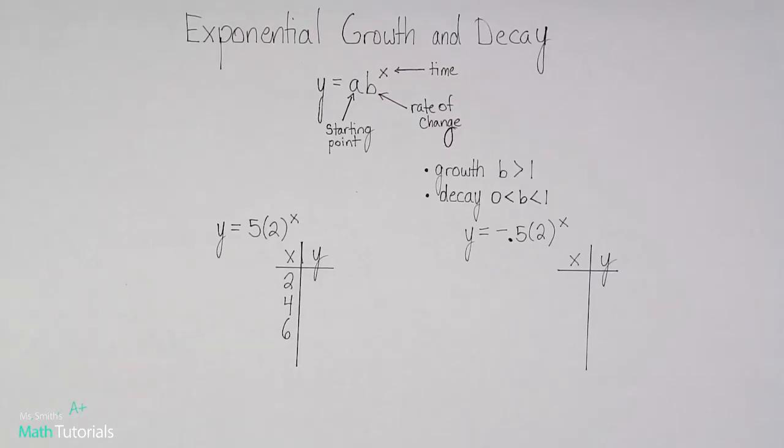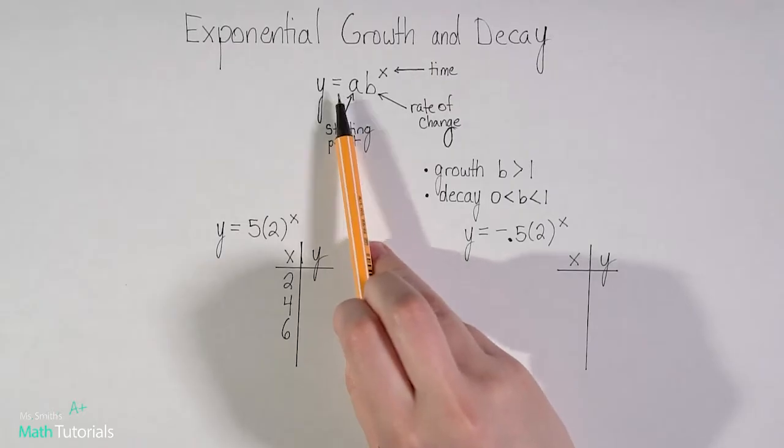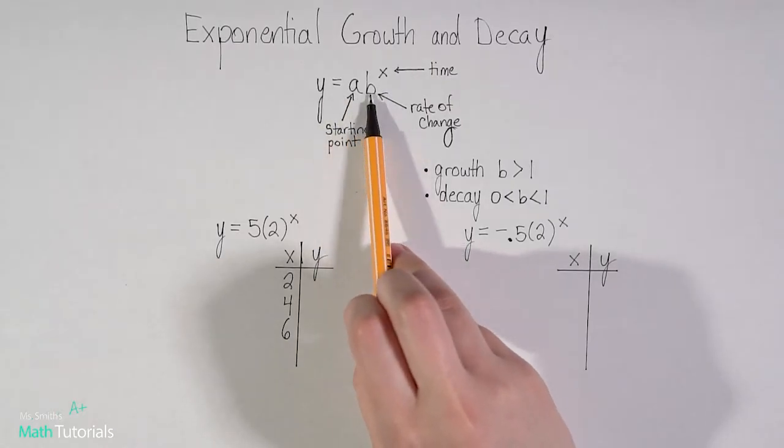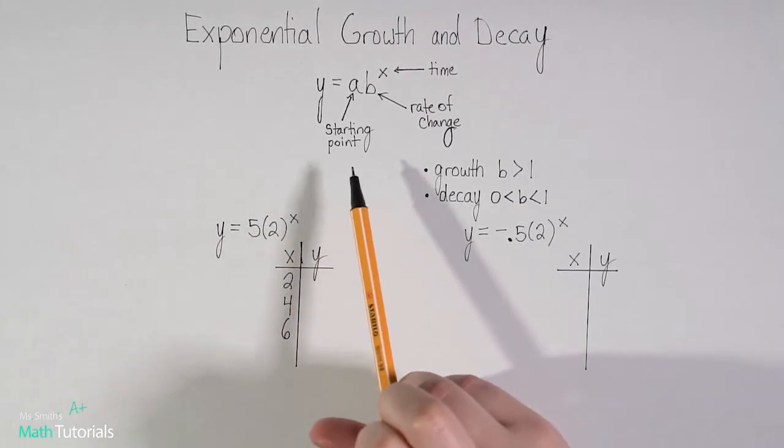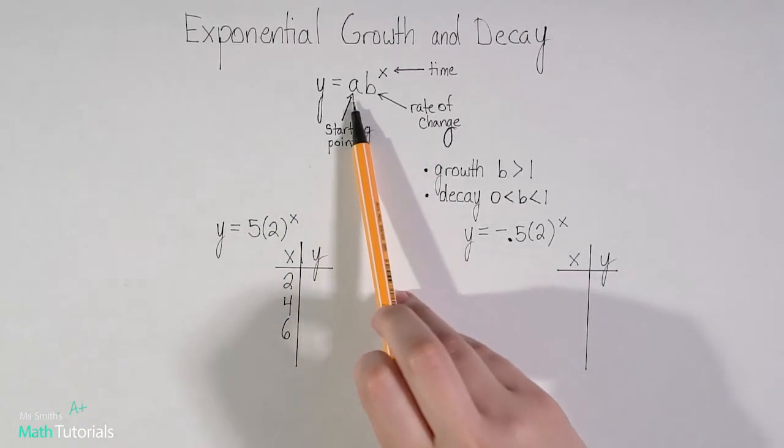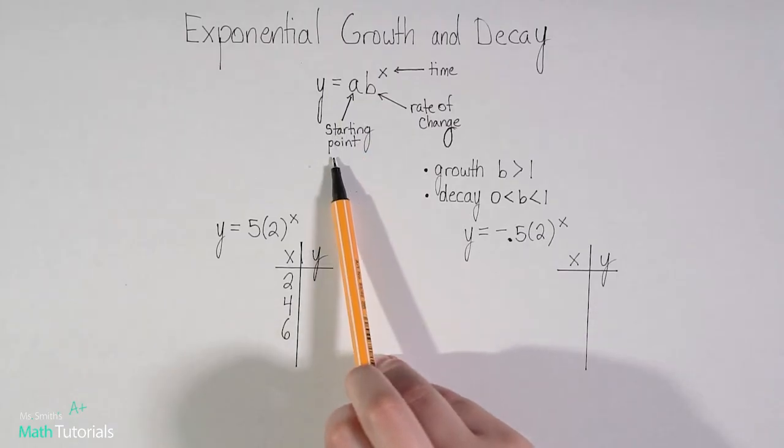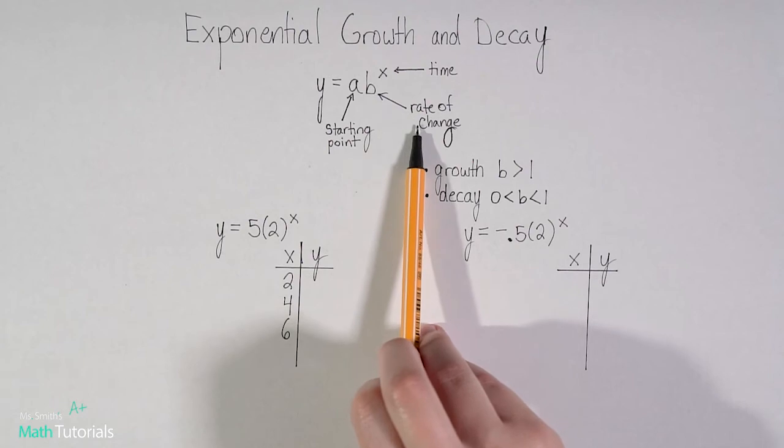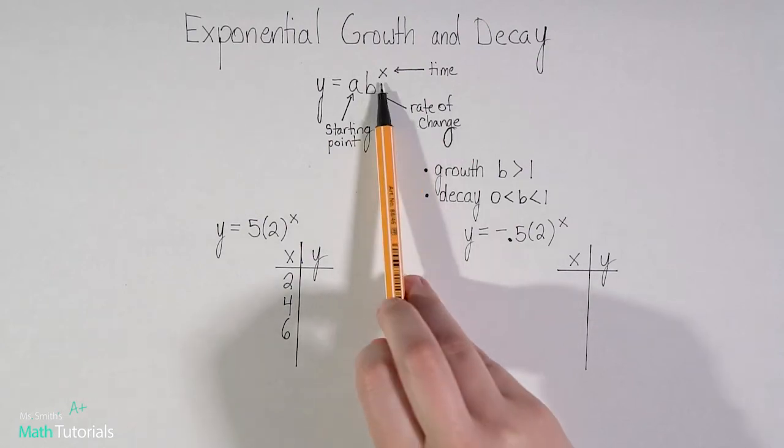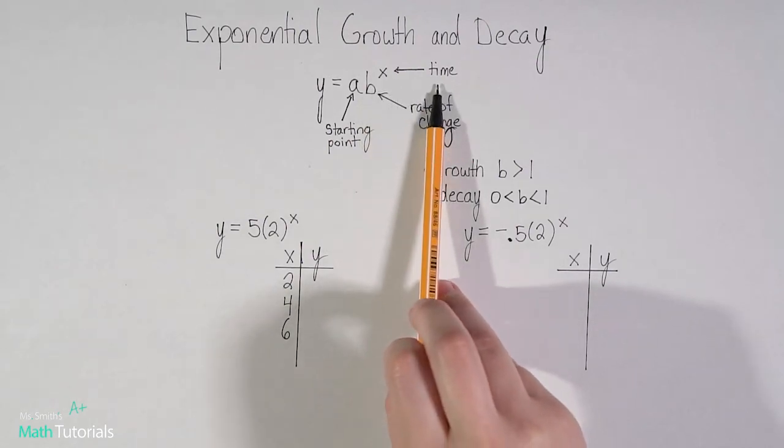This is our exponential formula. It's y equals a times b to the power of x. Let's break down what each part of this formula means. A is always going to be your starting point. Your b is going to be your rate of change, and your x will always be time.